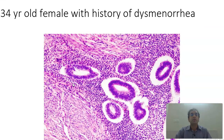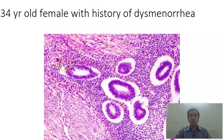Coming to a 34-year-old female with history of dysmenorrhea. What I see in this slide is that there is myometrial tissue within which there are islands of endometrial tissue. This becomes adenomyosis. Adenomyosis is when there are foci of endometrial glands and stroma within the myometrium.